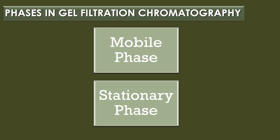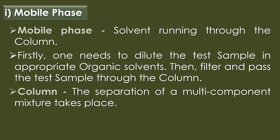There are two phases in gel filtration chromatography: mobile phase and stationary phase. The mobile phase is the solvent running through the column. First, one needs to dilute the test sample in an appropriate organic solvent, then filter and pass the sample through the column. The separation of the multi-component mixture takes place in the column.